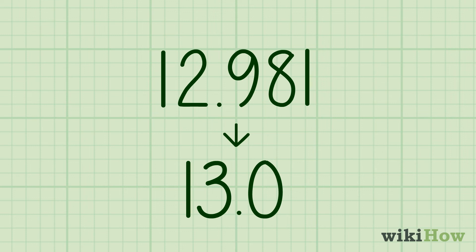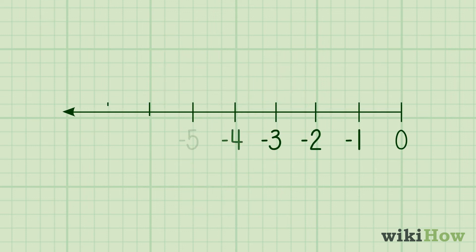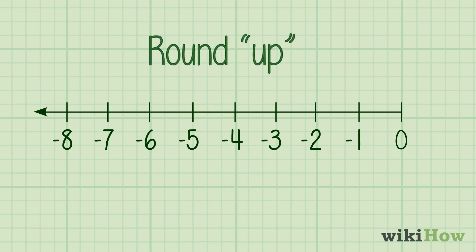If you're working with a negative number, rounding works the same way as with a positive number. However, be aware that when you round up a negative number, you're actually making the number smaller, or moving it further to the left of 0 on the number line. But the magnitude of the number will still increase, just like when you round up a positive number.